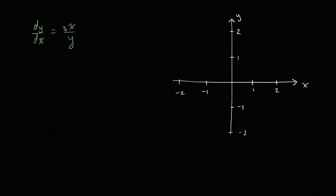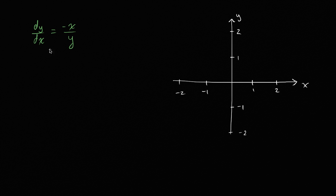Since this differential equation is just in terms of x's, y's, and first derivatives of y with respect to x, I could sample points on the coordinate plane, look at the x and y coordinates, substitute them in, figure out what the slope is going to be, and then visualize the slope with a small line segment that has the same slope as the slope in question.